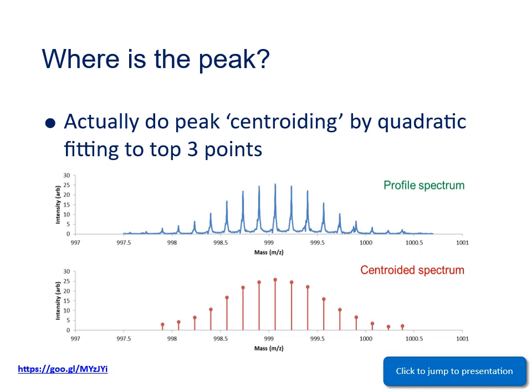The benefit of the centroided spectrum is that you can see a quick summary of the peak positions in a spectrum. However, the dis-benefit is you've lost all the information about the shape of the peaks, any potential shoulders on the sides of the peaks, and you can no longer see the noise, so it's hard to get an idea of the quality of the spectrum. As an expert mass spec user you'll come to miss that missing data, and start to appreciate the extra information that's held in the profile spectrum.